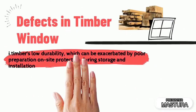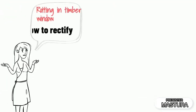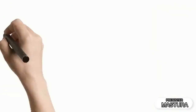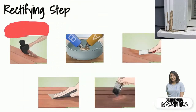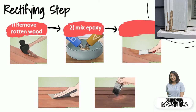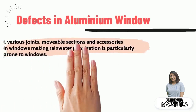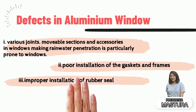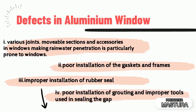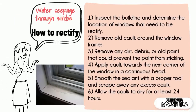The defects in timber window are as shown in the slide. An example of a defect in timber window is rotting on the window frame. These are the steps involved in rectifying the rotting timber window frame. The defects found in aluminium window are as shown in the slide. An example of a defect in aluminium window is water seepage through the window, and the rectification steps are as shown in the slide.